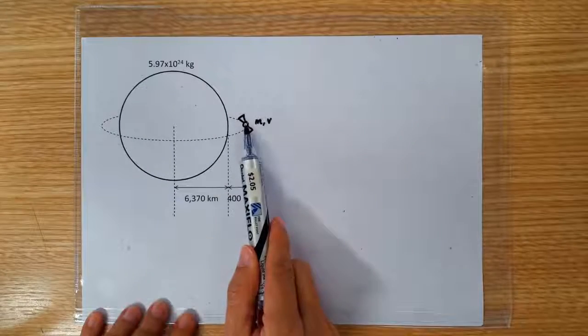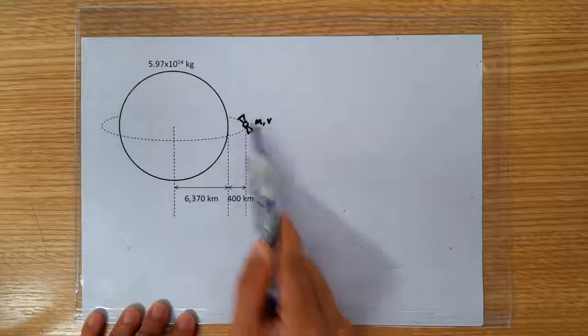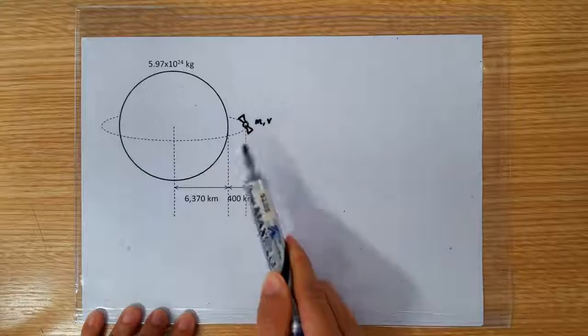Suppose we have a satellite that's orbiting at 400 kilometers above the Earth's surface, so it's going round and round the Earth in a circular orbit.